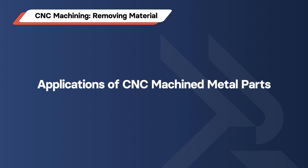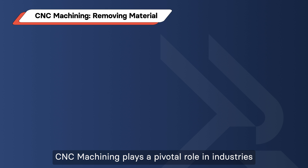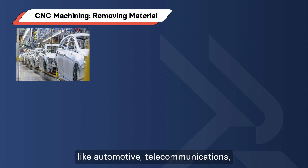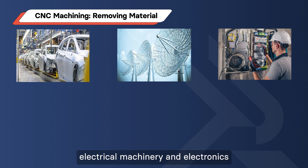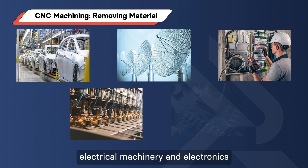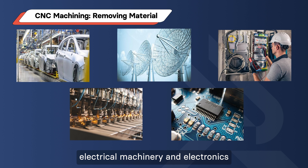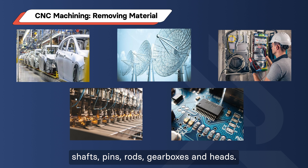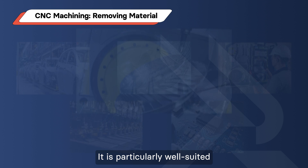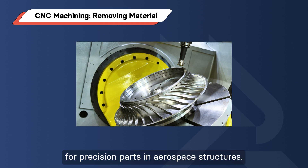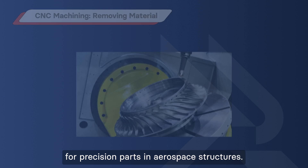Application of CNC Machined Metal Parts. CNC machining plays a pivotal role in industries like automotive, telecommunications, electrical, machinery, and electronics, producing components such as bushings, shafts, pins, rods, gearboxes, and heads. It is particularly well-suited for precision parts in aerospace structures.